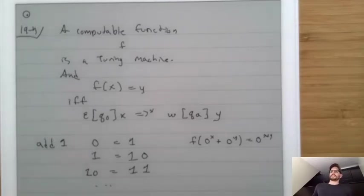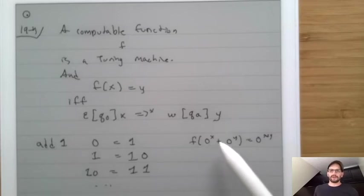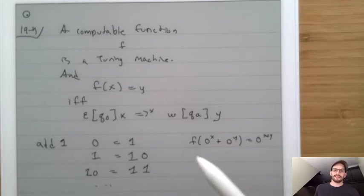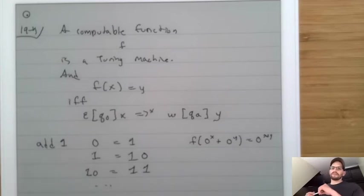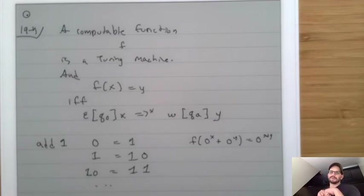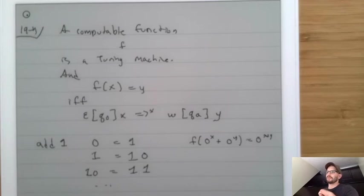For instance, how would you write f(0^x + 0^y) = 0^(x+y)? A sneaky way: take the first 0, replace it with a blank, find the plus, replace it with a 0, then rewind and put the head in front of the blank. My advice is that when designing Turing machines, never think about how to do it in a way that the Turing machine understands — do it in a way that makes the text look the way it's supposed to.